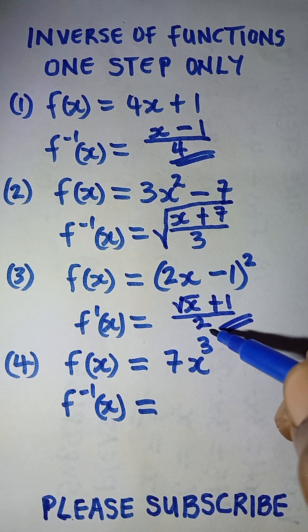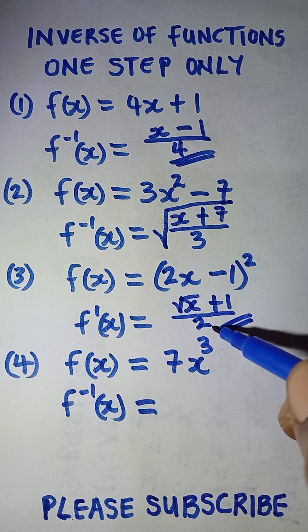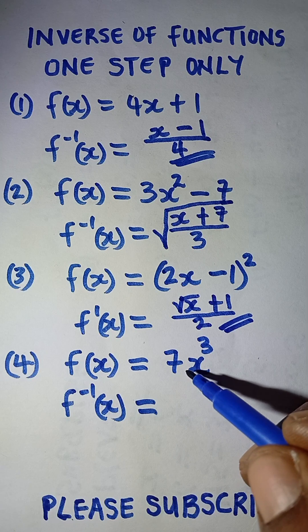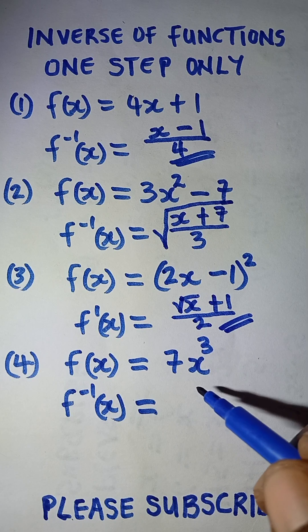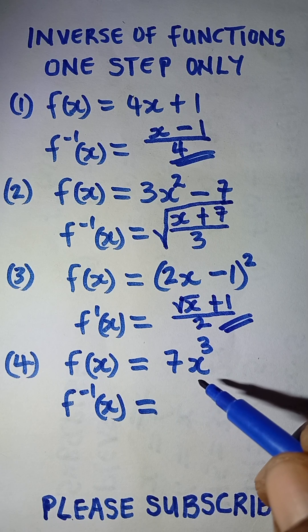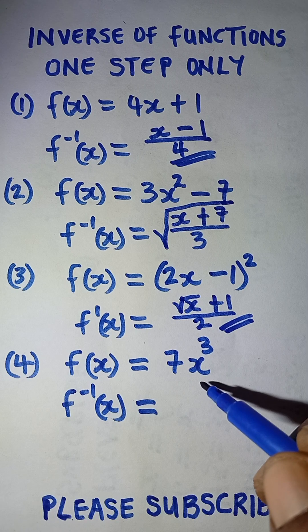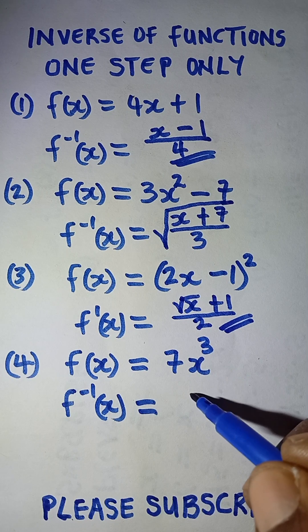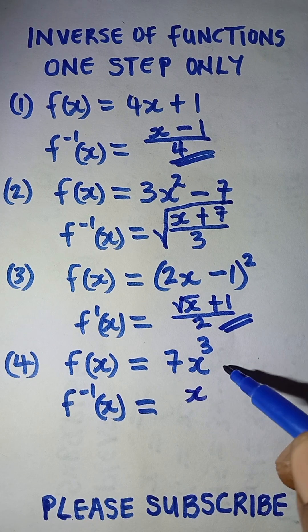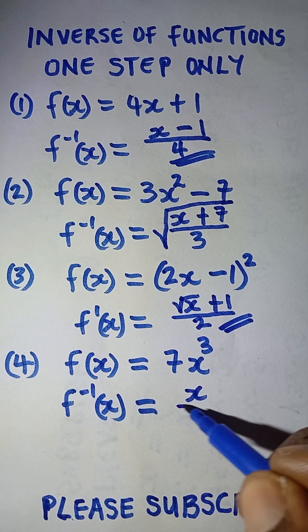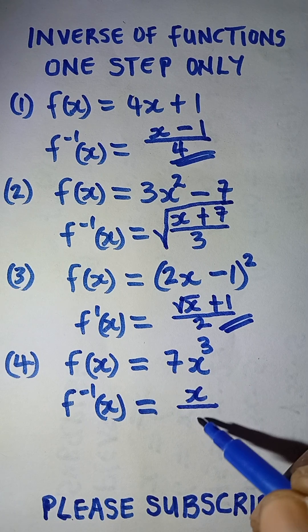And then this one says 7x cubed. To get the inverse of this, what you just need to do is, as usual, take this x here. There's no other value here, so you take only the x, and then you divide by the value that is here, which is seven.